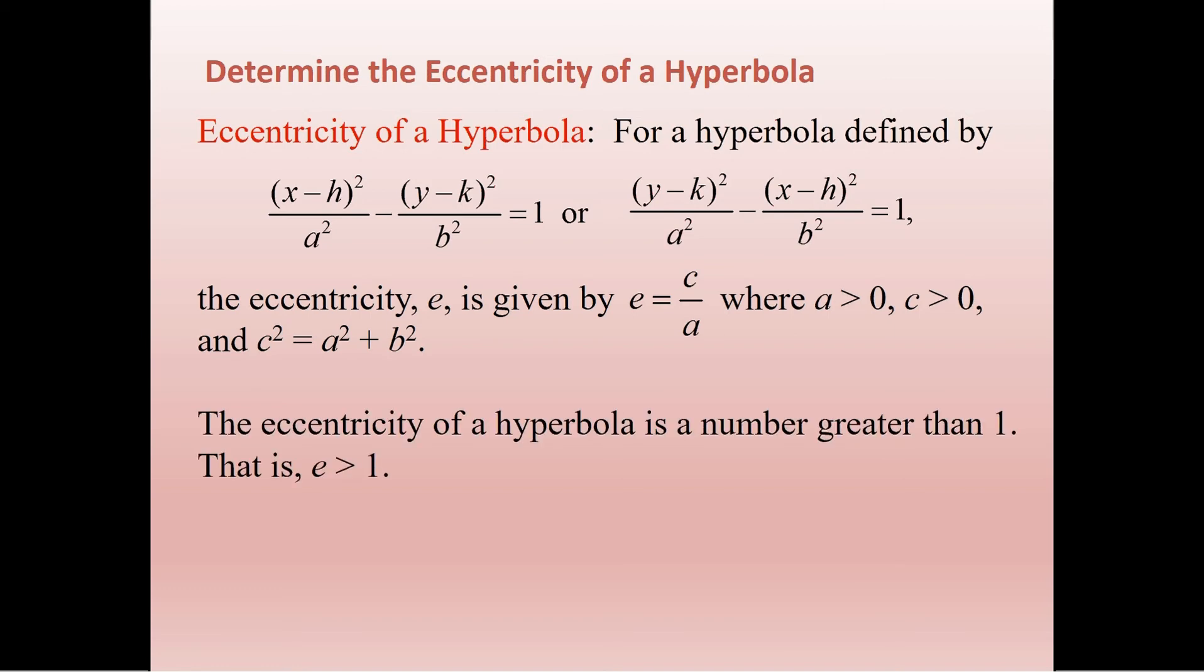Now, the eccentricity of a hyperbola will always be a number greater than 1. Remember, for an ellipse, it was always less than 1, between 0 and 1. Here, because c is always going to be bigger than a, this value e has to be bigger than 1.